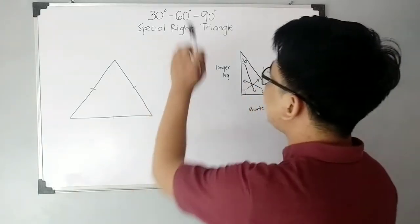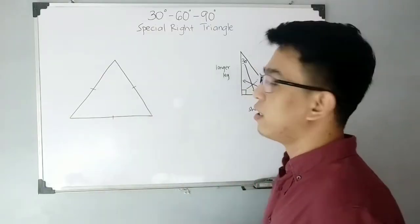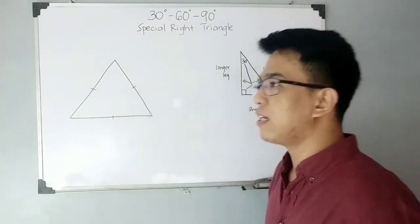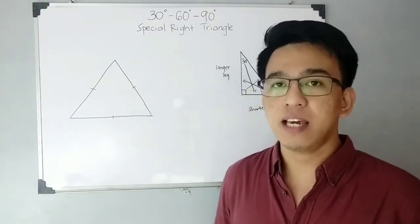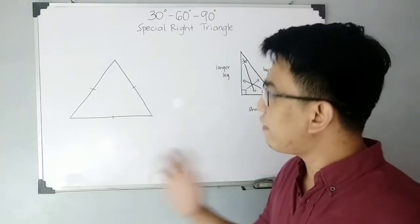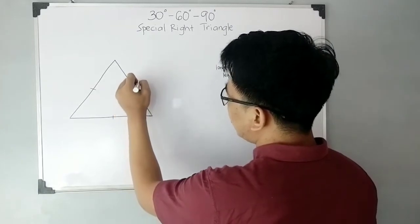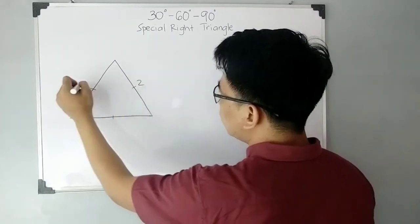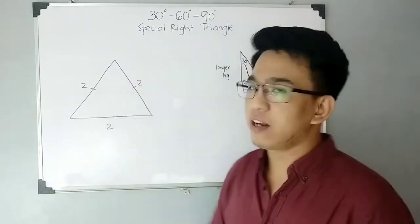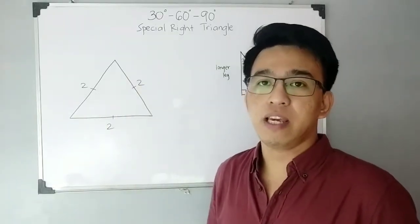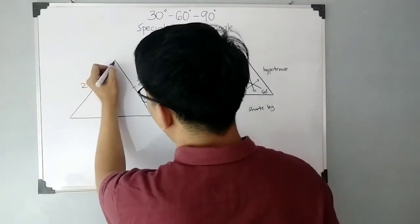To derive the 30-60-90 special right triangle, we will be using an equilateral triangle. An equilateral triangle is a triangle with three equal sides. Let's start with sides of length two, two, and two. To start deriving it, we will draw an altitude.